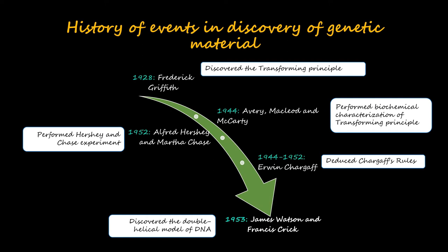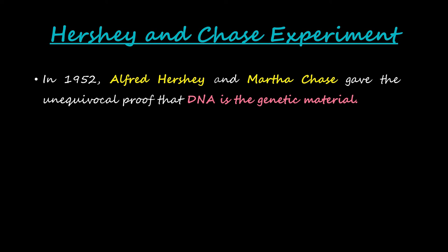We talked about the discovery of Frederick Griffith by means of transforming principle in 1928. We also discussed the biochemical characterization of the transforming principle by Avery, MacLeod and McCarty. In this video we are going to talk about the discoveries of Alfred Hershey and Martha Chase by means of Hershey and Chase's experiment, and we'll also talk about Chargaff's rules by Erwin Chargaff before we come to the discussion of the double helical model of DNA.